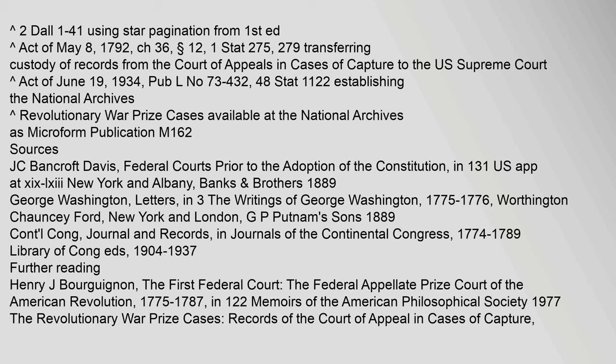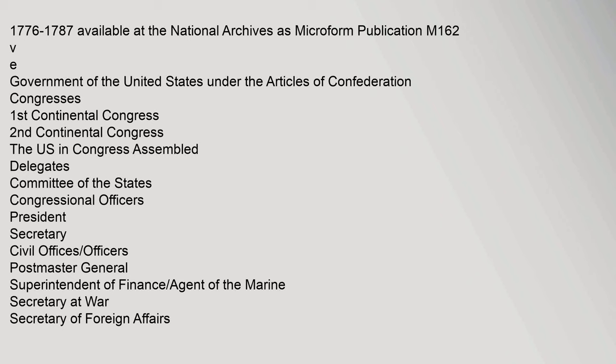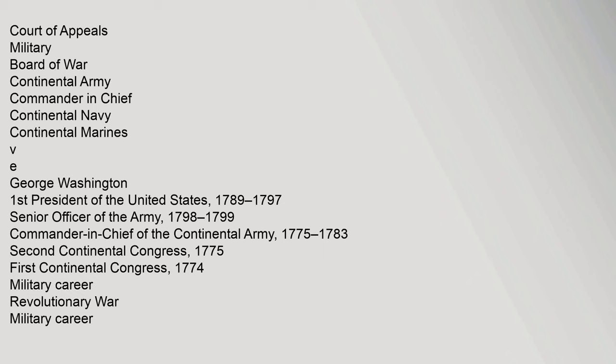Further reading includes J.C. Bancroft Davis, Federal Courts Prior to the Adoption of the Constitution, in 131 U.S. Appendix at XIX–LXIII (New York and Albany: Banks, 1776–1787), available at the National Archives as Microform Publication M162. The article also appears within navigation for the Government of the United States under the Articles of Confederation, covering the Continental Congresses, congressional officers, civil offices, and the Court of Appeals.